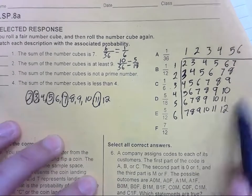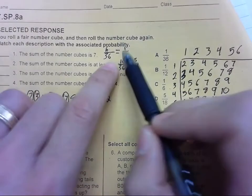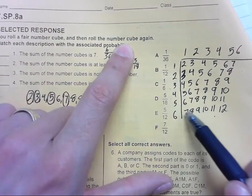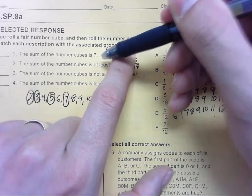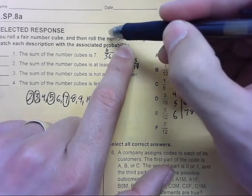So here are all the sums. There are 36 total. The sum is 7: there are 6 out of 36 ways to get a sum of 7. You can simplify those, divide them both by 6, and you get 1/6.